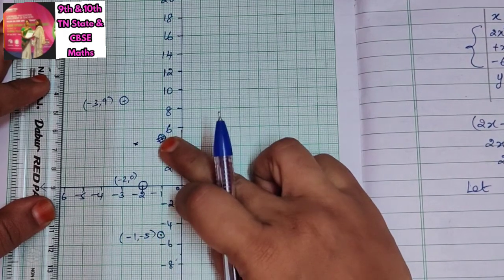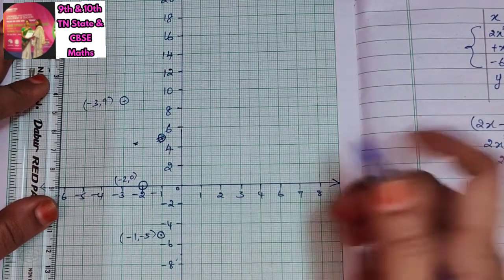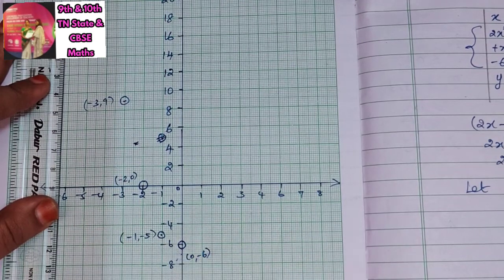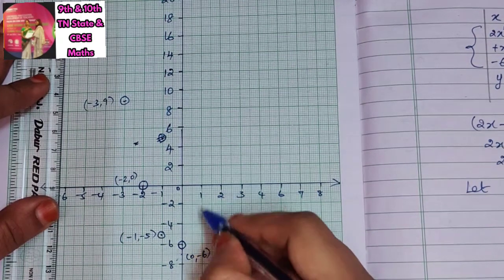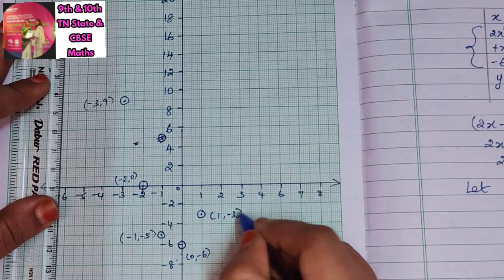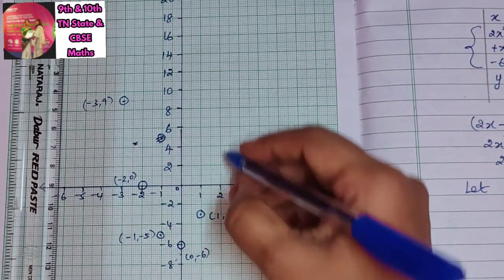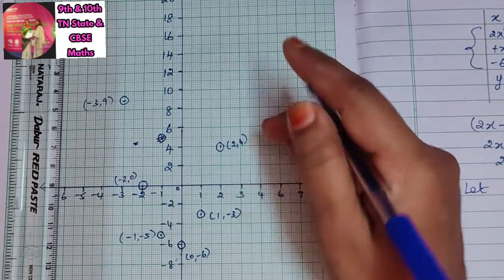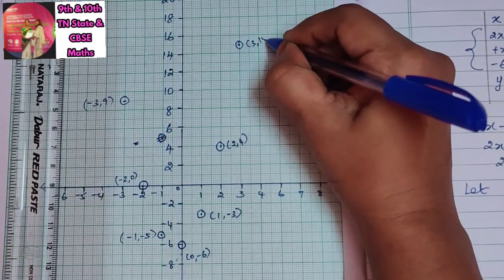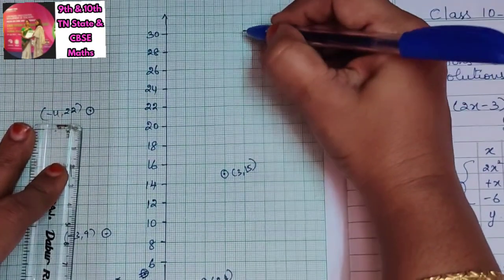For (-1, -5): I initially marked +5 by mistake — it needs to be plotted on the opposite side, so (-1, -5) is plotted here. Then (0, -6) is plotted here. Then (1, -3) is plotted at this point.